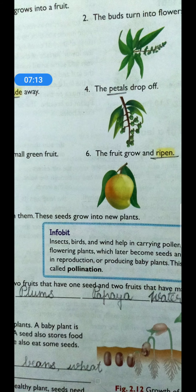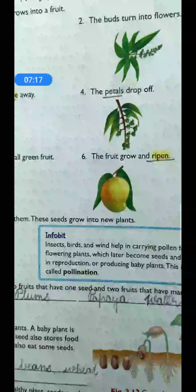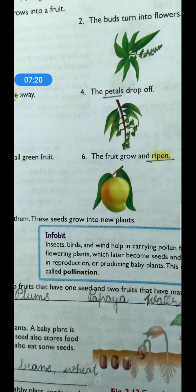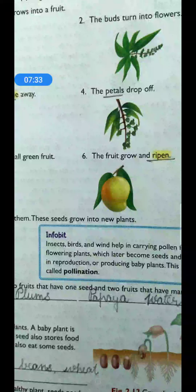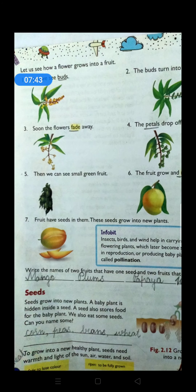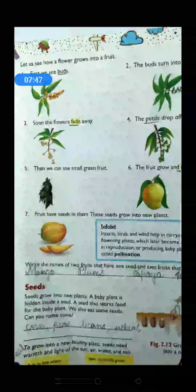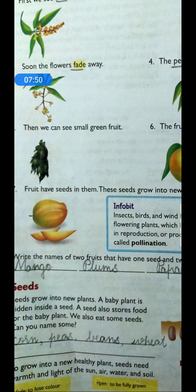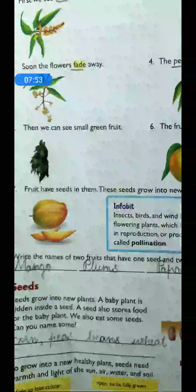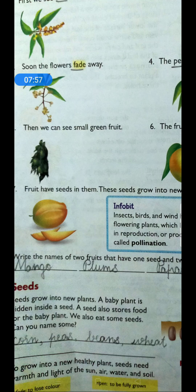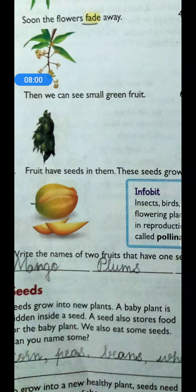The fruit grows and ripens. First the small fruit is there, then slowly, slowly — just like a small baby grows into a child and then into an adult — in the same way, the fruit also starts small and slowly grows. And it will ripen. Ripen means to be fully grown. In the same way, the fruit will also get ripe and ready to eat. And then fruits have seeds in them.